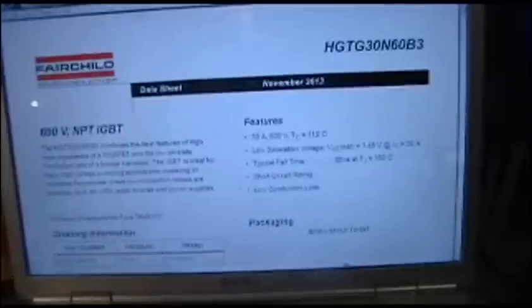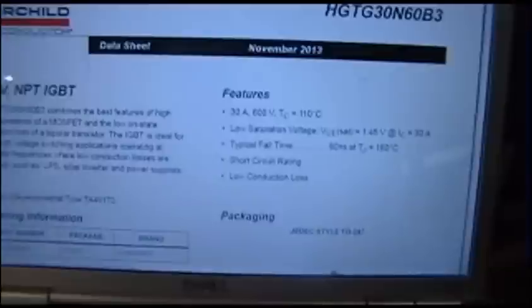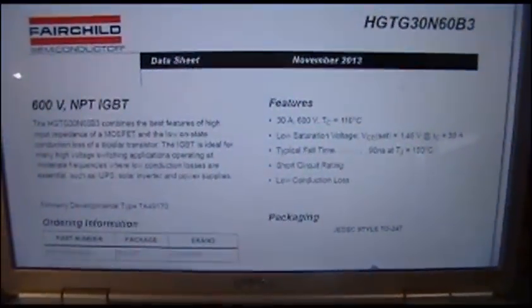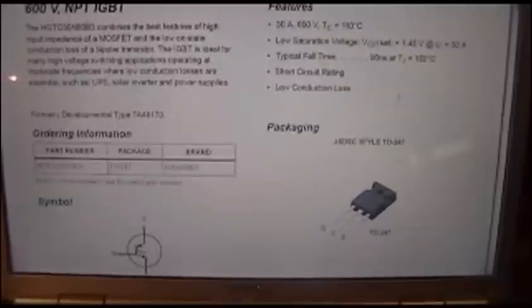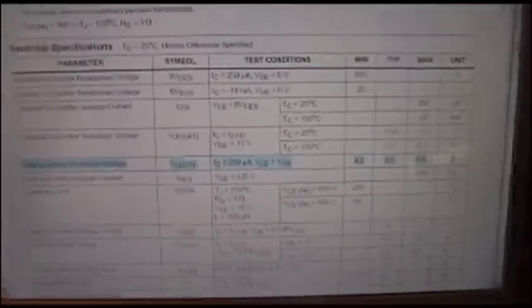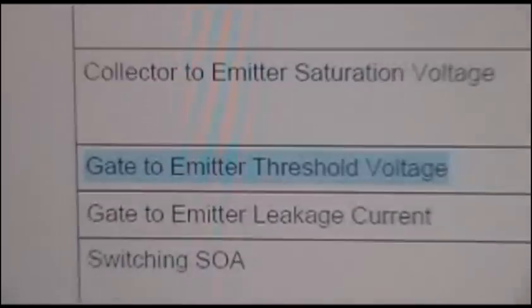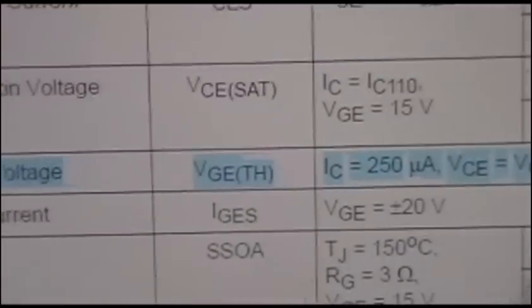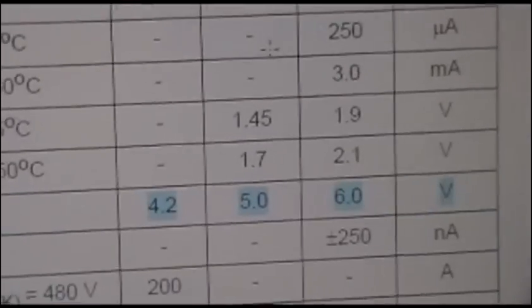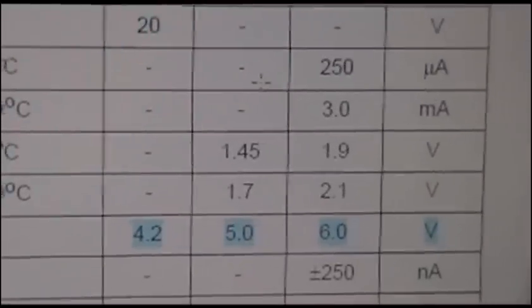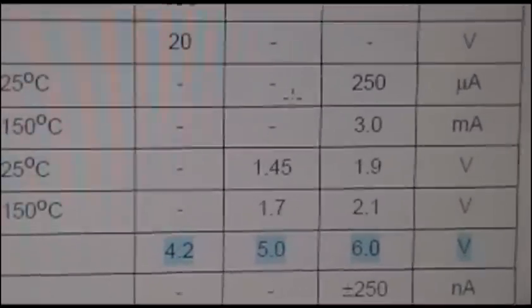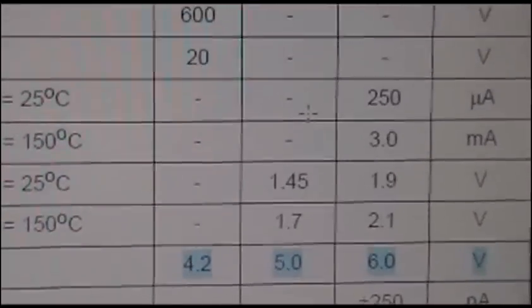When you're looking at the datasheet for an IGBT, this happens to be the one I'm using. As you scroll down you'll see right in here, this is the gate to emitter threshold voltage, and what you'll see is the min, the typical, and the max voltages. So this should turn on somewhere around 5 volts.